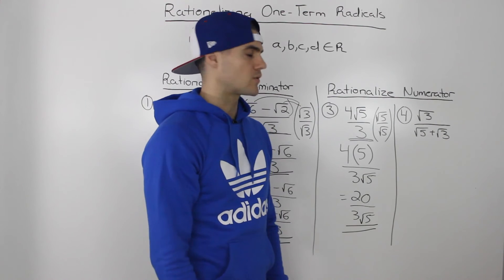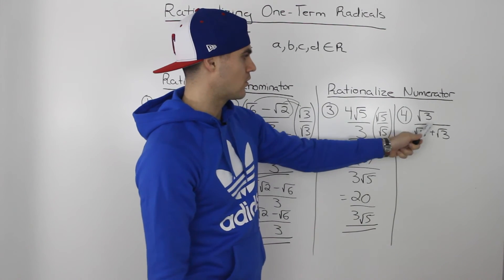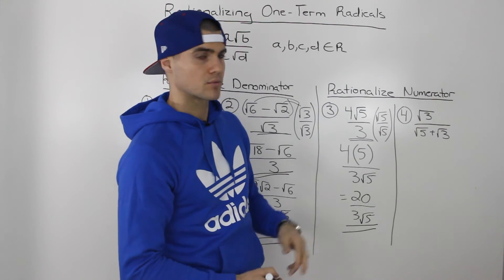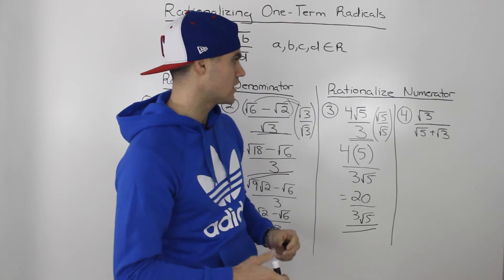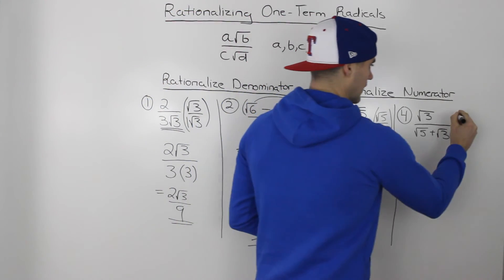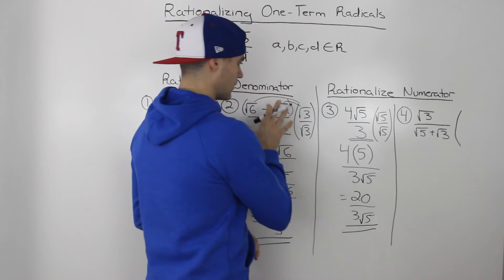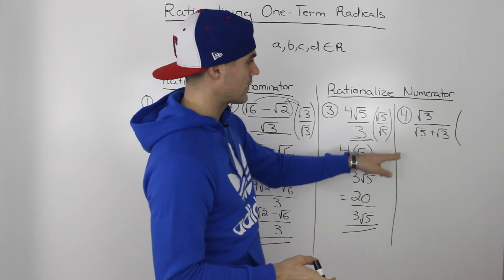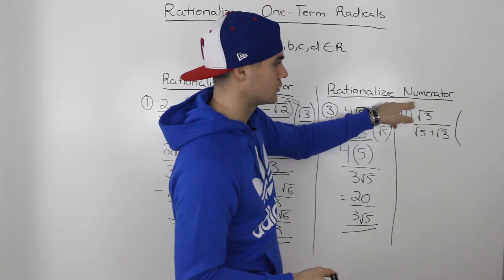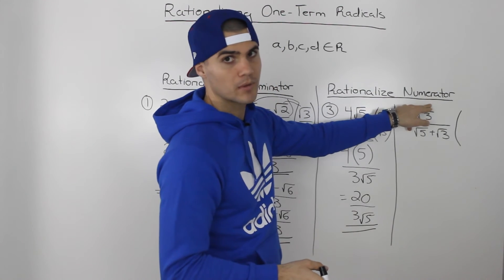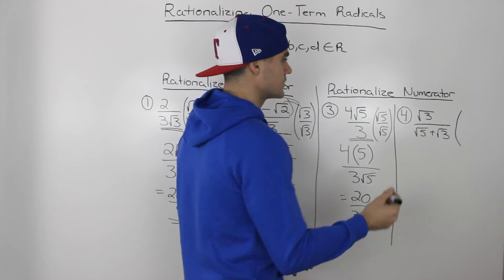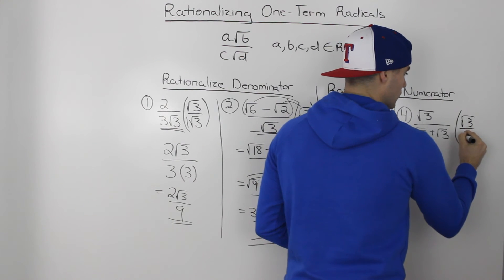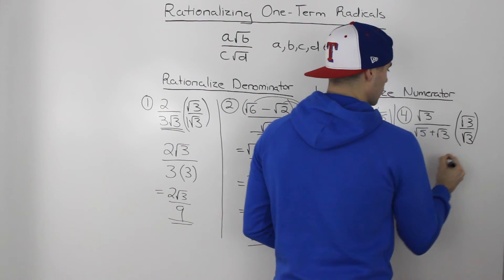Moving on to the fourth example: we've got root 3 over root 5 plus root 3, and we have to rationalize the numerator — get rid of this root 3. Don't get confused as in example 3 and think it's a two-term radical. We're rationalizing the numerator and there's only one term in the numerator, so we follow the same format.